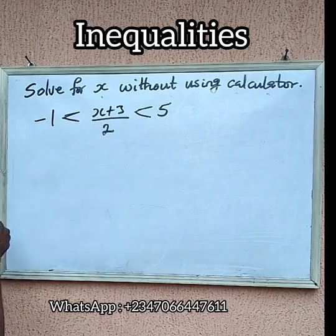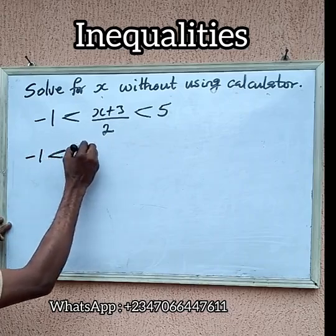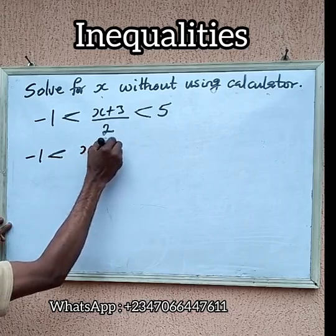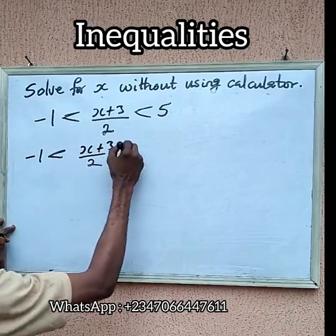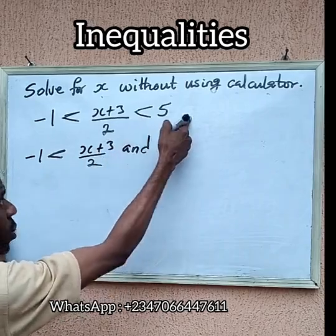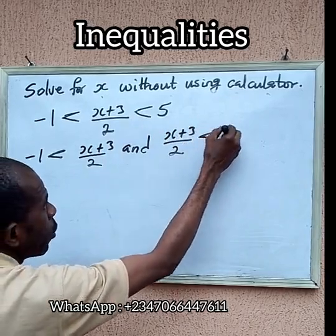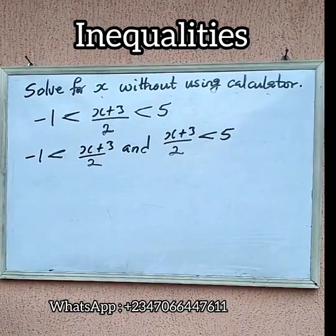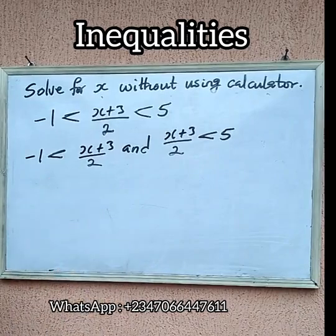Two inequalities are satisfied here. We have the first one: -1 less than (x+3)/2, here is greater than -1. And we also have that same on the right-hand side: we have (x+3)/2 less than 5. So we will solve these two inequalities, then at the end of the day we combine it and write it as a range of values for x.